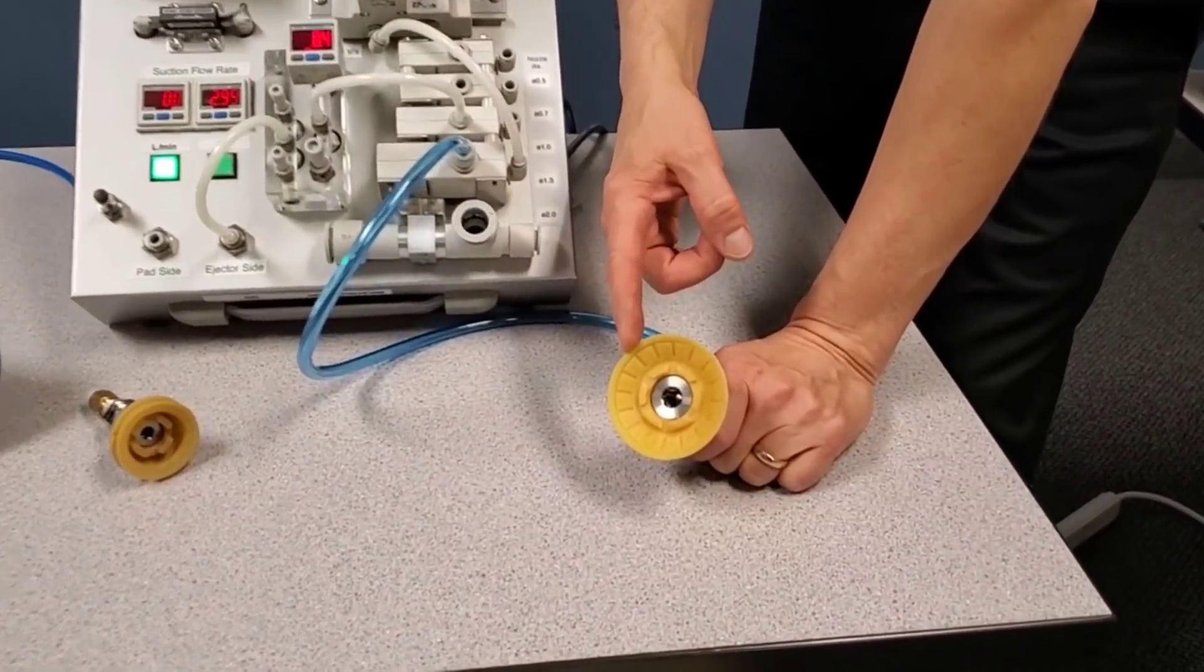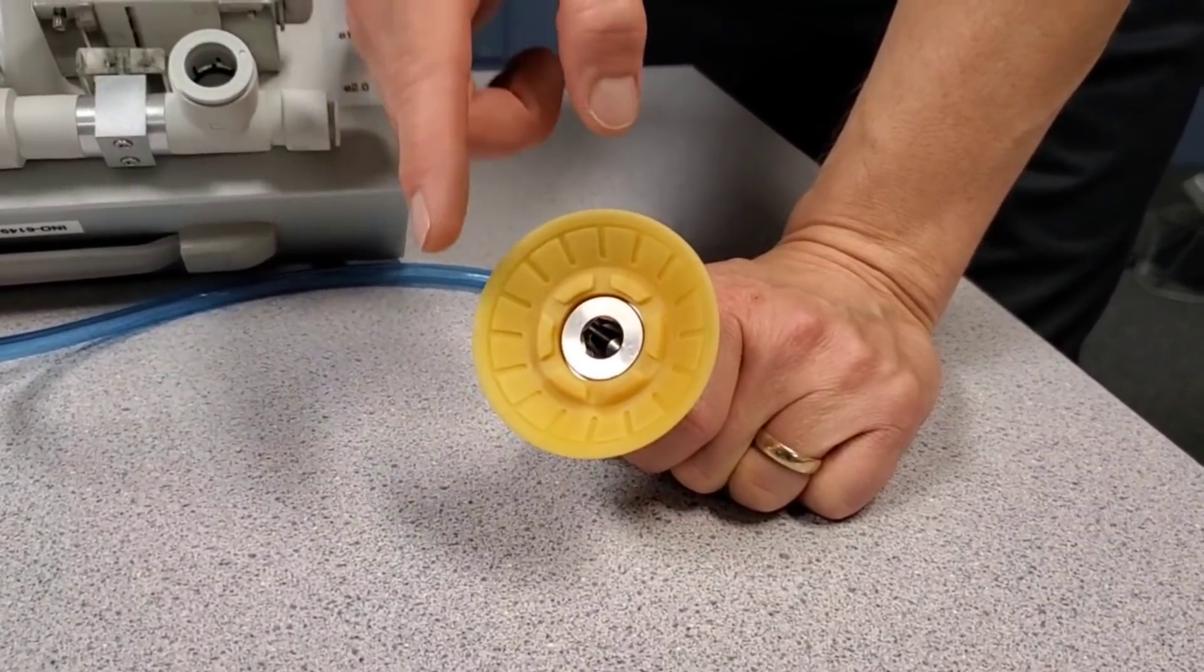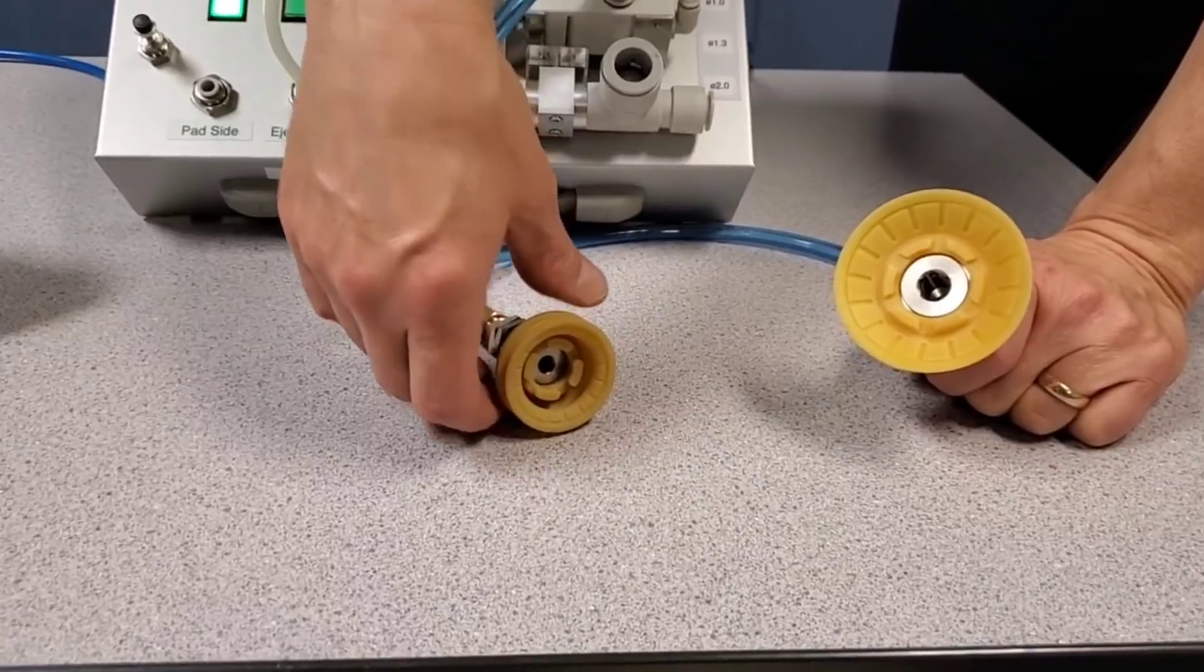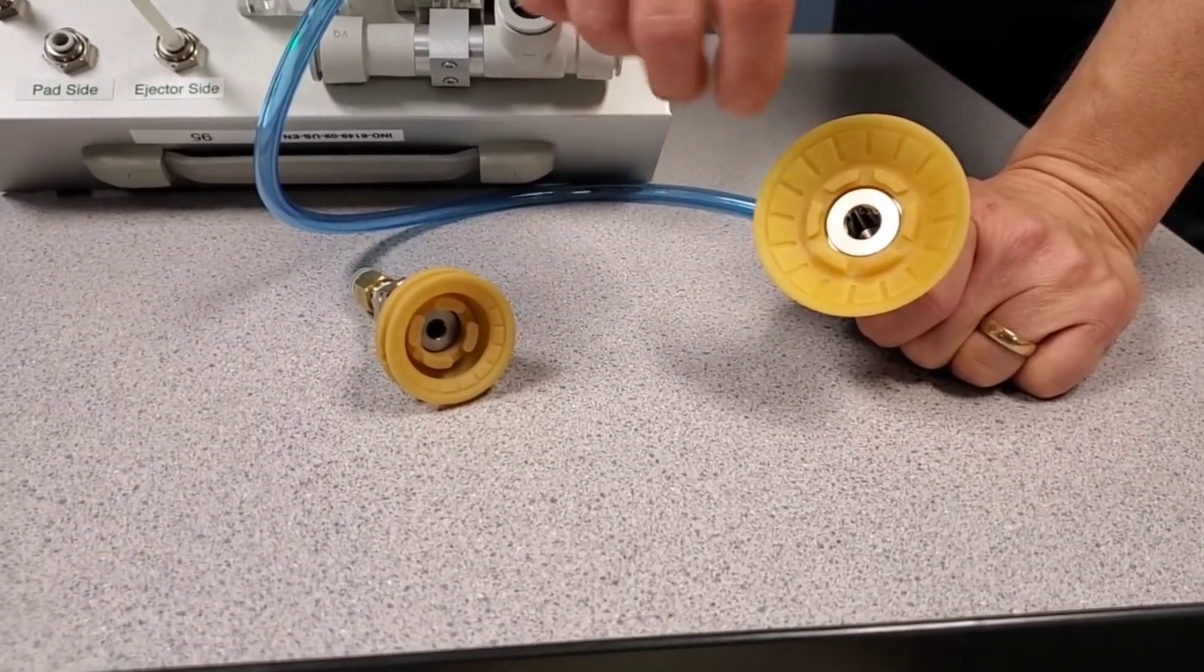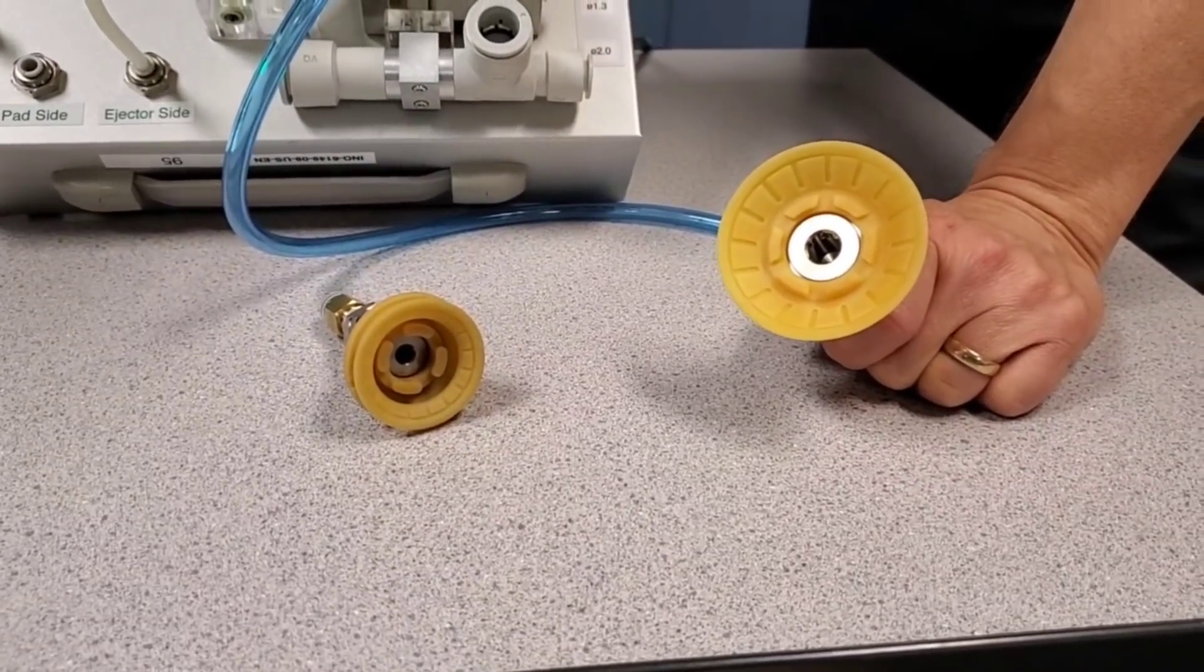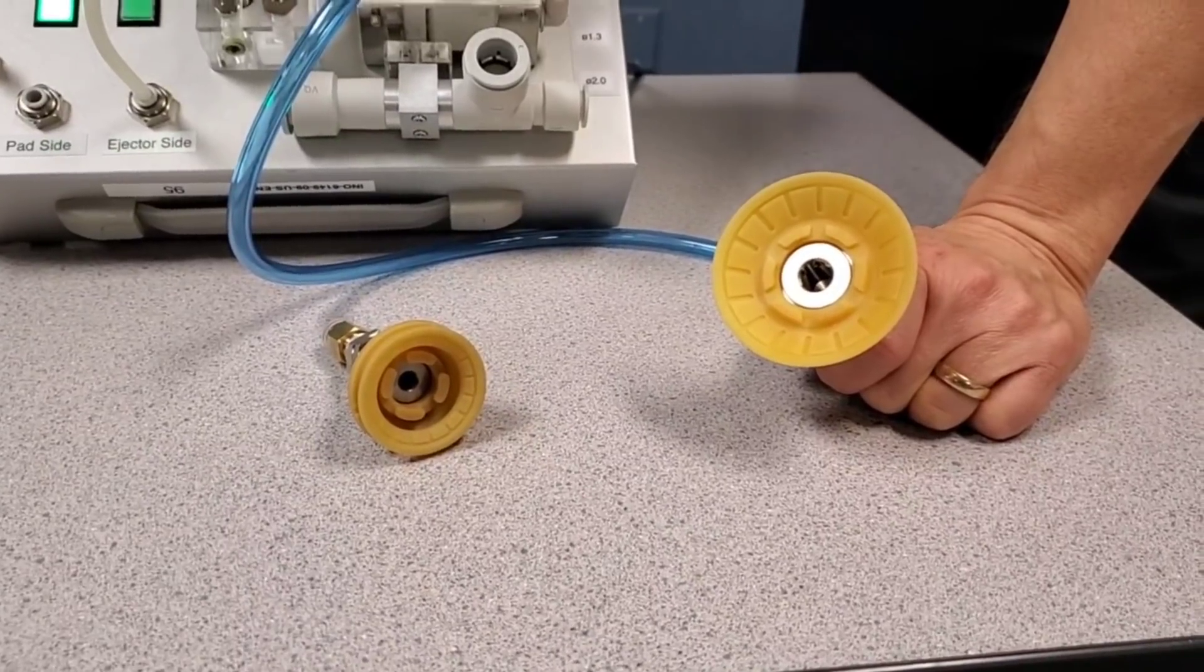This is our ZP-3E, the newest generation vacuum cup. This is a flat design versus the bellows design. It has a rigid interior and you can see the grooves. This is also shot blast so that it has a better release of the workpiece when the vacuum is stopped.